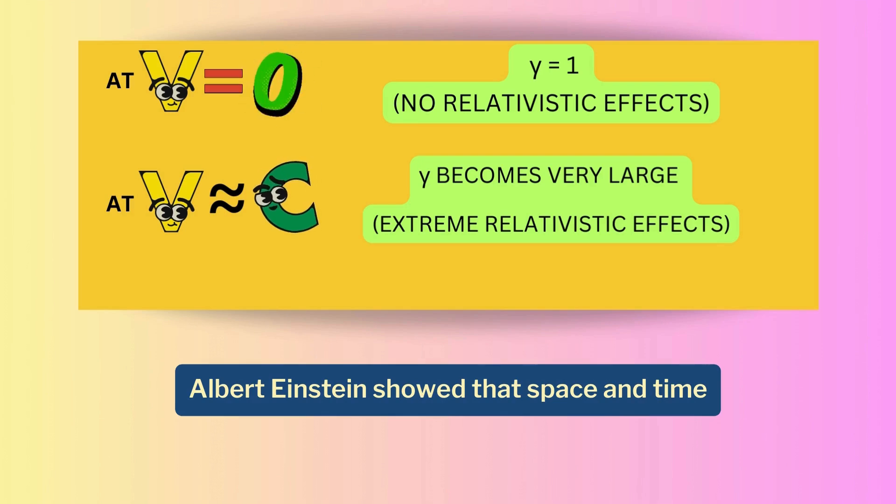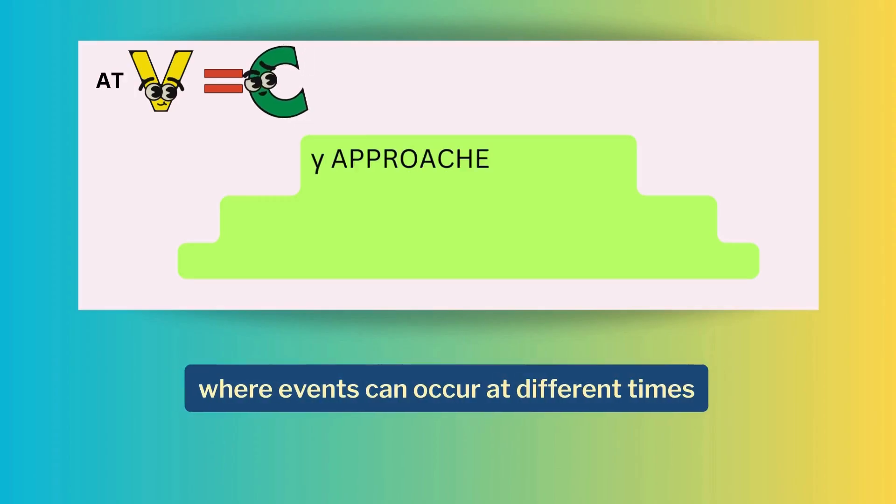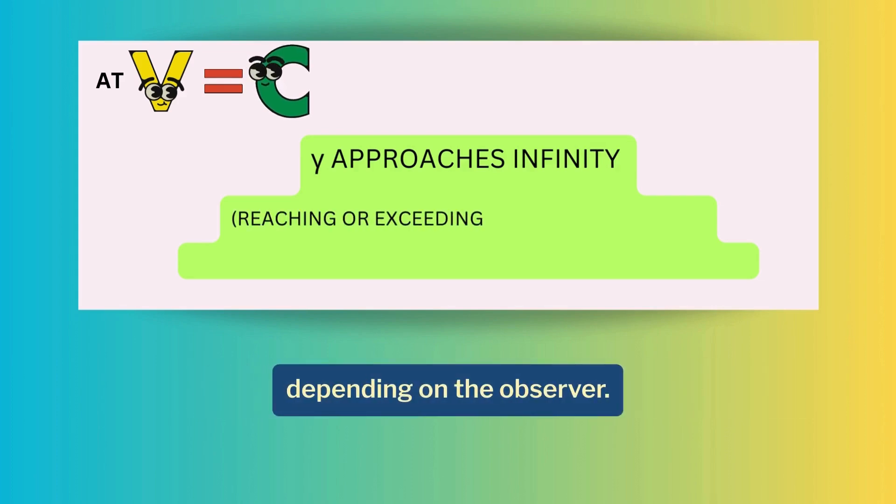Albert Einstein showed that space and time are linked in a concept called space-time, where events can occur at different times depending on the observer.